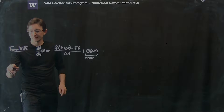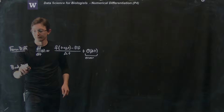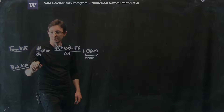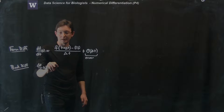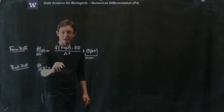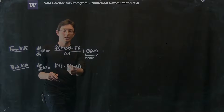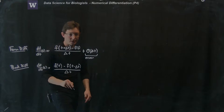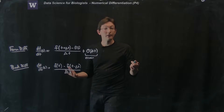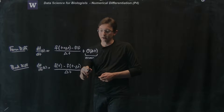We also had backward difference, which is very similar. df/dt evaluated at our base point t is equal to f(t) minus f(t − Δt), divided by Δt. So instead of looking at a point to the right, I look at a point to the left. You can compute the Taylor series of this quantity and you'll find exactly the same order Δt error.